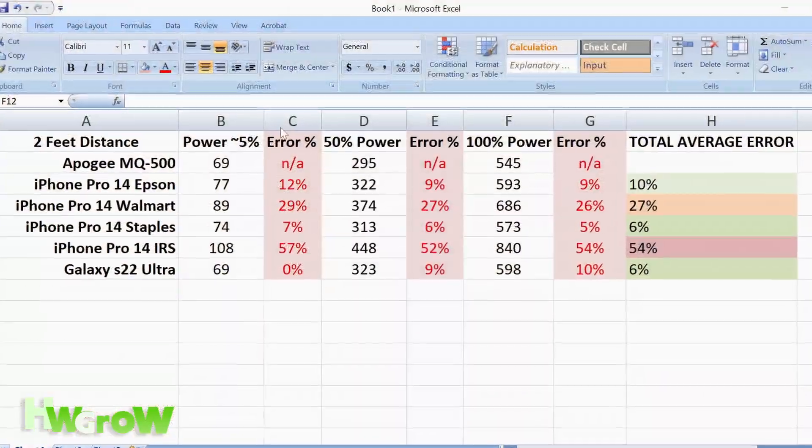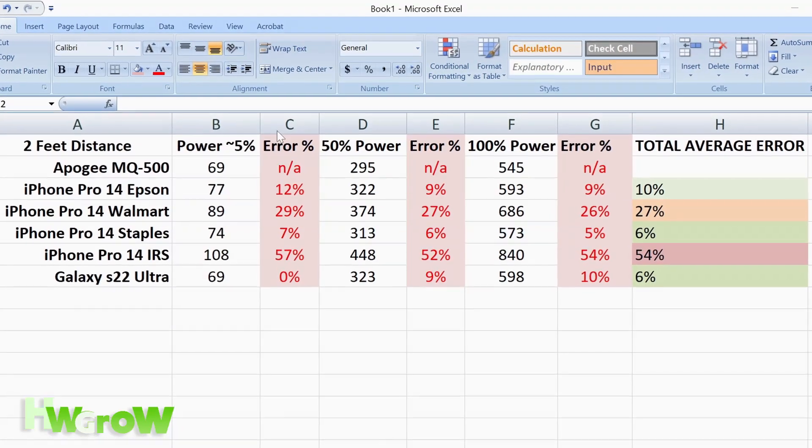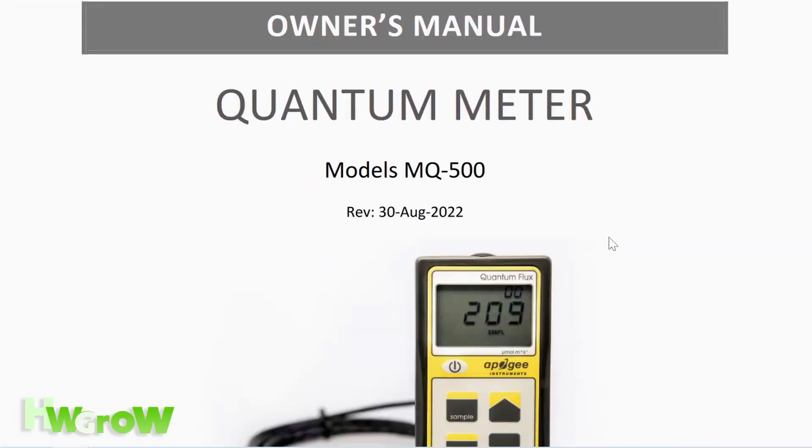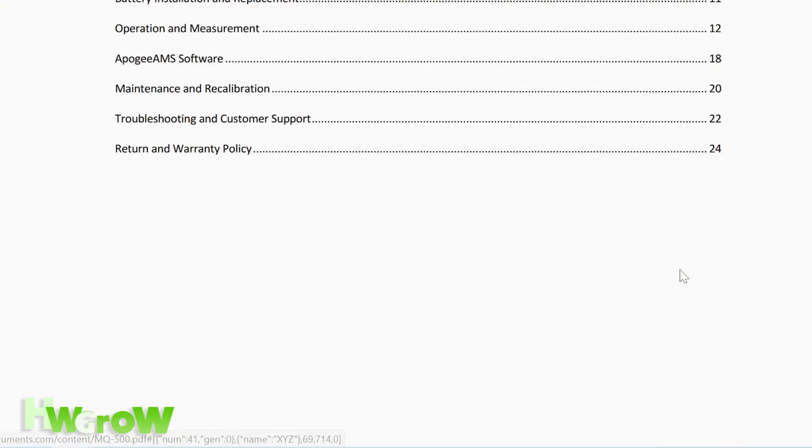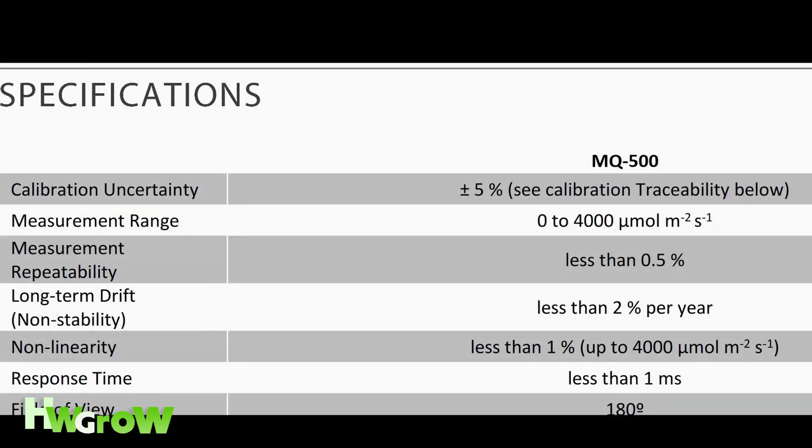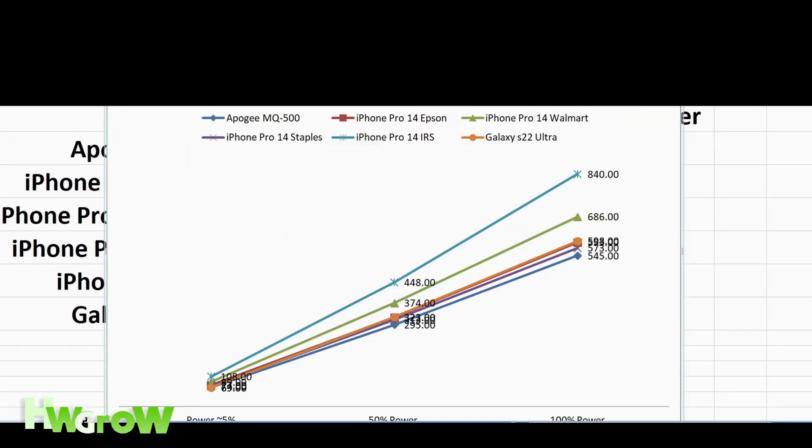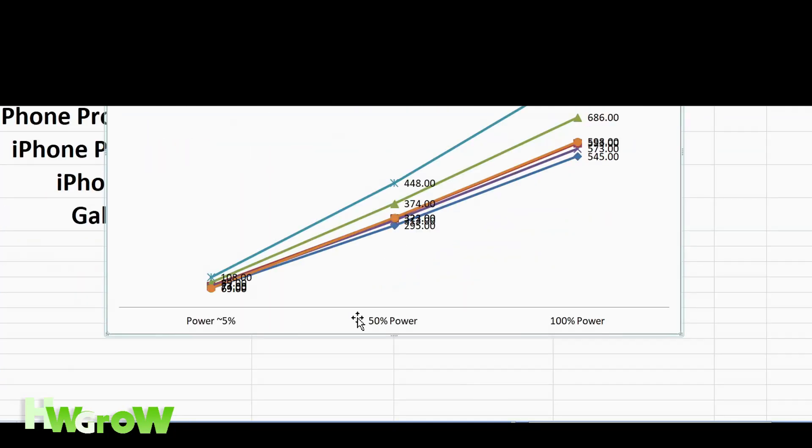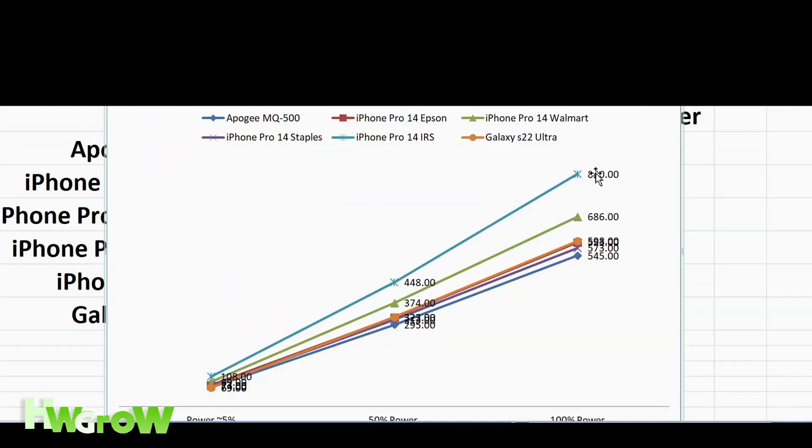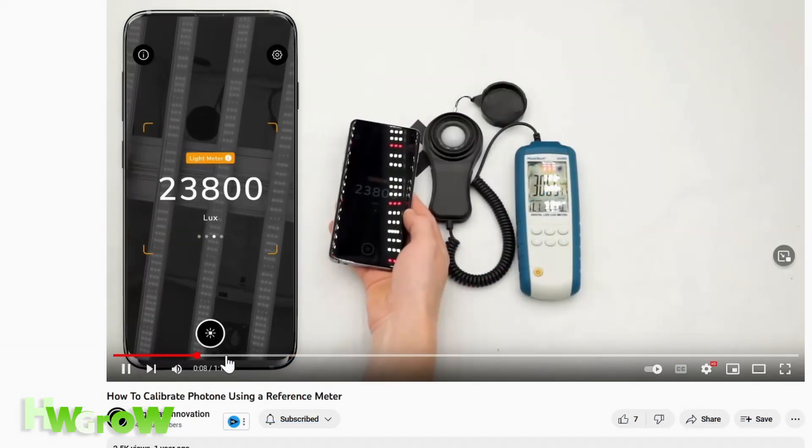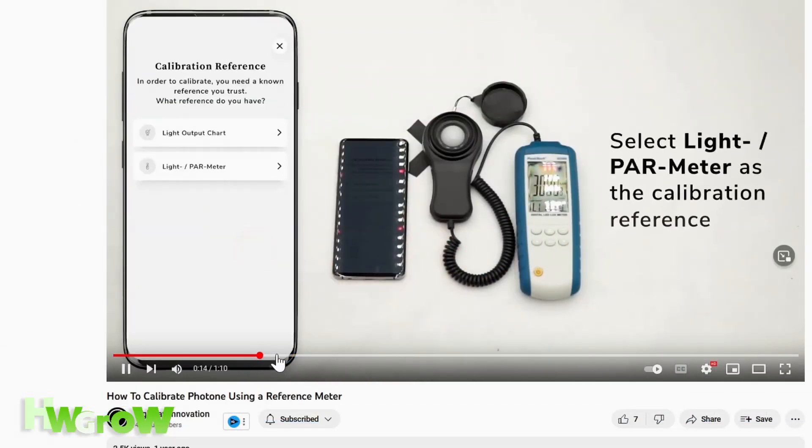So here are the results. It's worth mentioning that, as stated on the manual, the Apogee may have a discrepancy of 5% straight out of the box. I had this data mapped out to a chart, and you could see it's linear, which is great because now you could calibrate it using the video linked in the description.